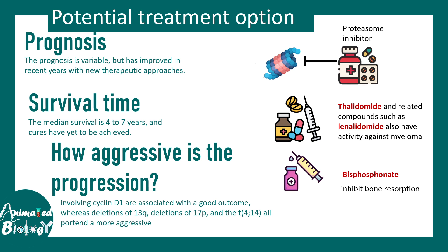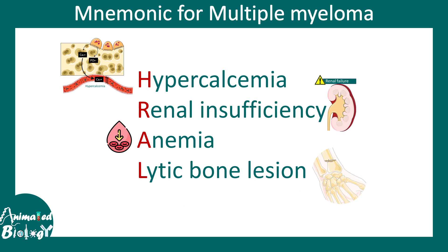In summary, the four key aspects of multiple myeloma captured in the mnemonic HR-PAL are: hypercalcemia — due to osteoclast-driven bone dissolution; renal insufficiency — because Bence Jones proteins overburden the kidneys; anemia; and lytic bone lesions with their characteristic punched-hole appearance.